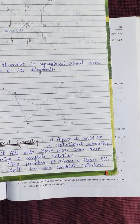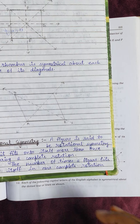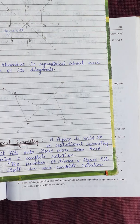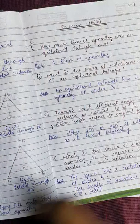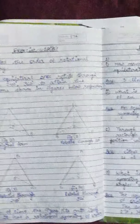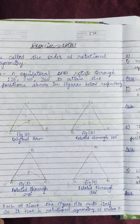Now we come to rotational symmetry. What is rotational symmetry? A figure is said to have rotational symmetry if it fits onto itself more than once during a complete rotation. The number of times a figure fits onto itself in one complete rotation is called the order of rotational symmetry.